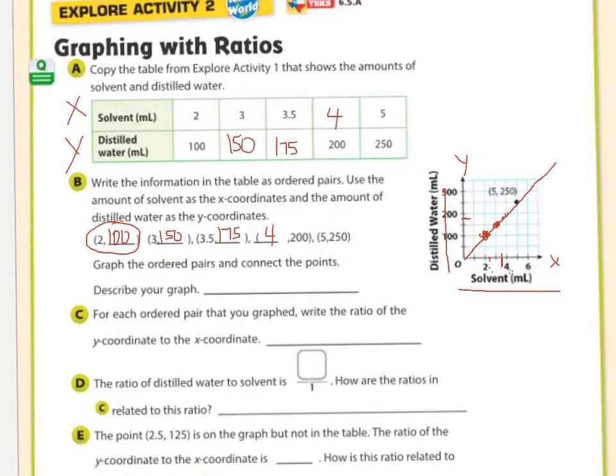So you see how that makes a straight line? That means that it's proportional. It's all equal to each other, because it made a straight line. So we graphed the ordered pairs, and then we connected the points, described the graph. It makes a straight line.